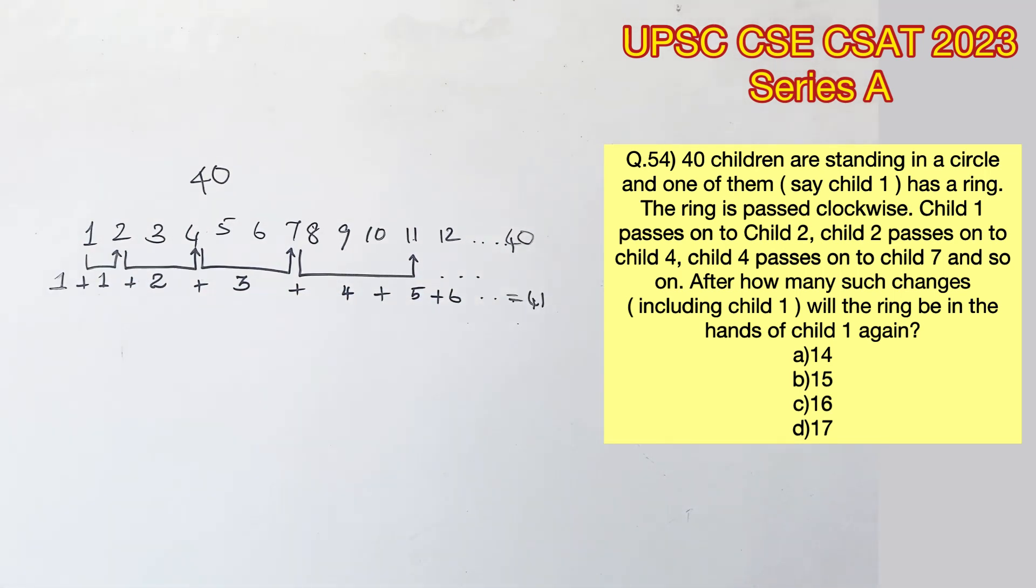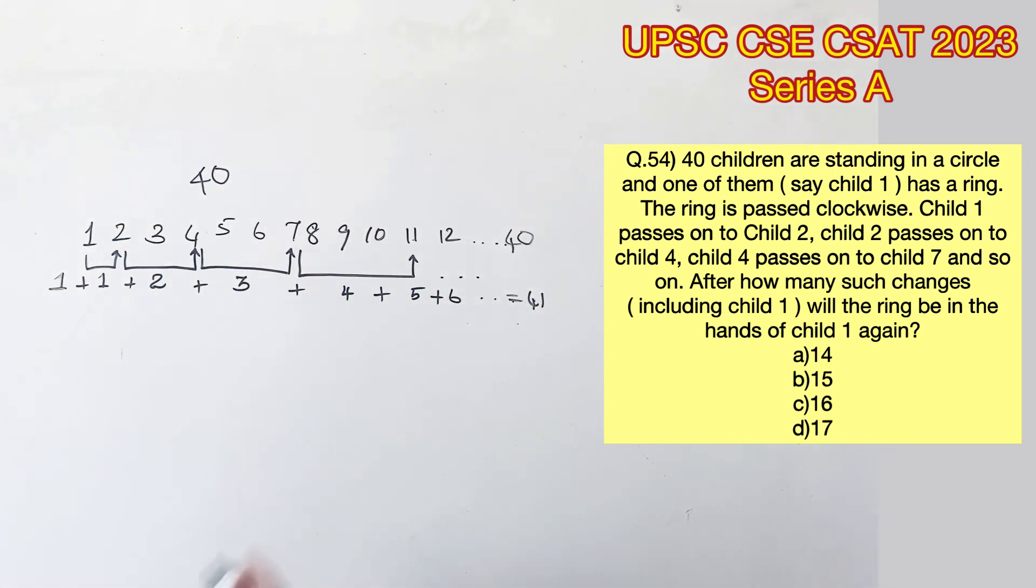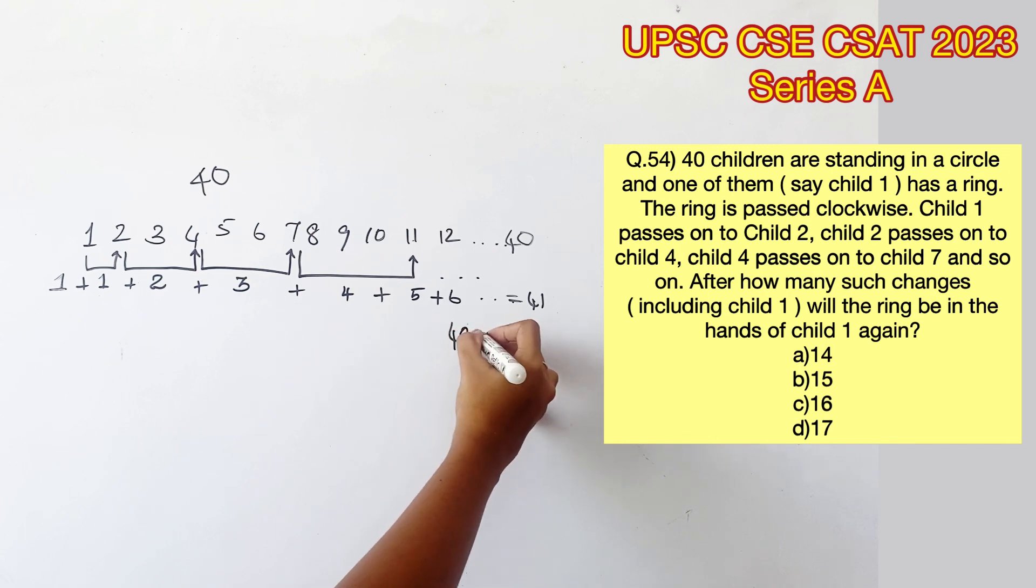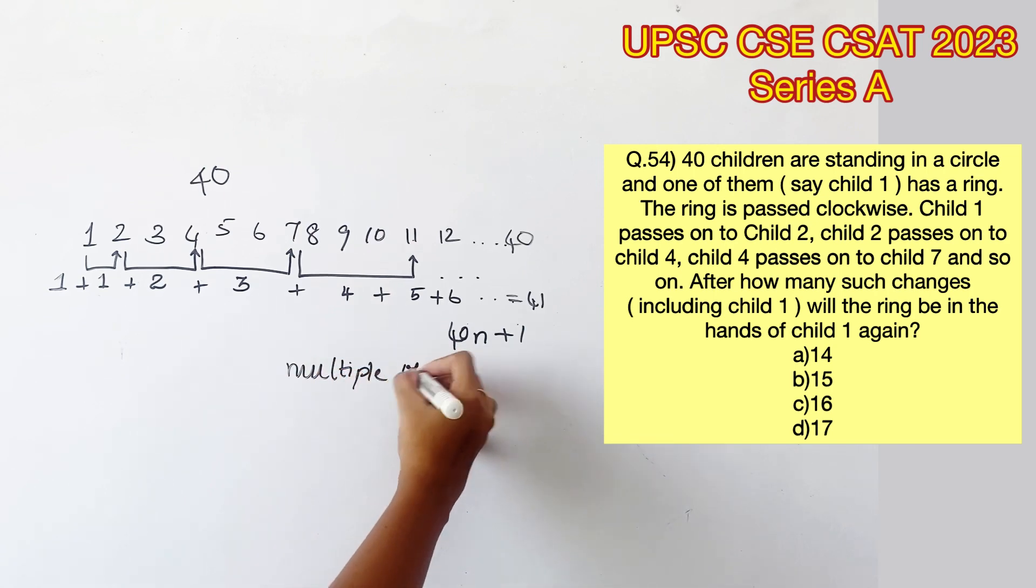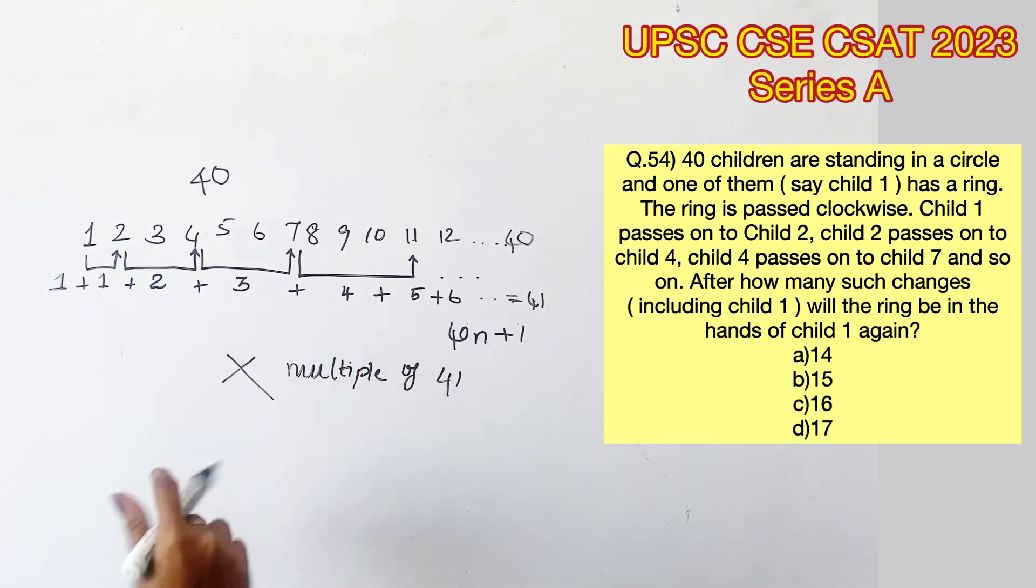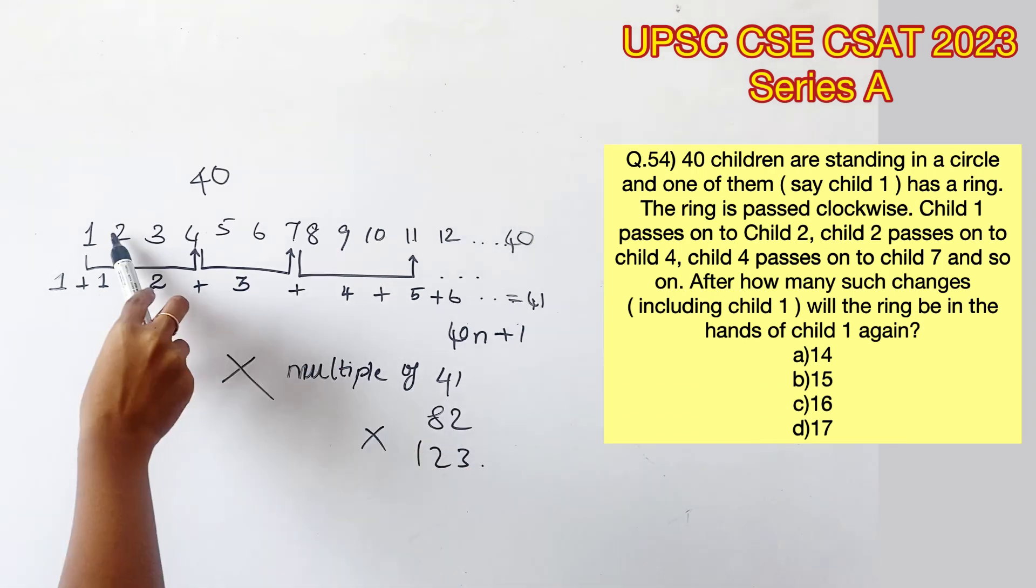So if these numbers don't sum up to 41, the next circle must also be calculated, and this can be represented by 40n plus 1. You cannot take this as 41 multiples, because when you take it that way, you will be reaching a total of 82 and then 123, which will not be applicable because they are standing in a circle.